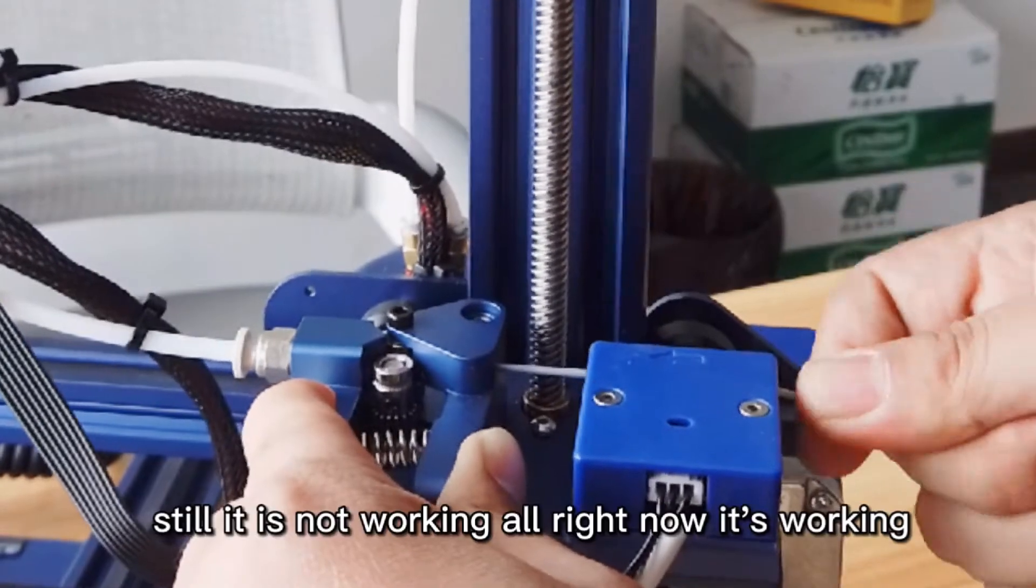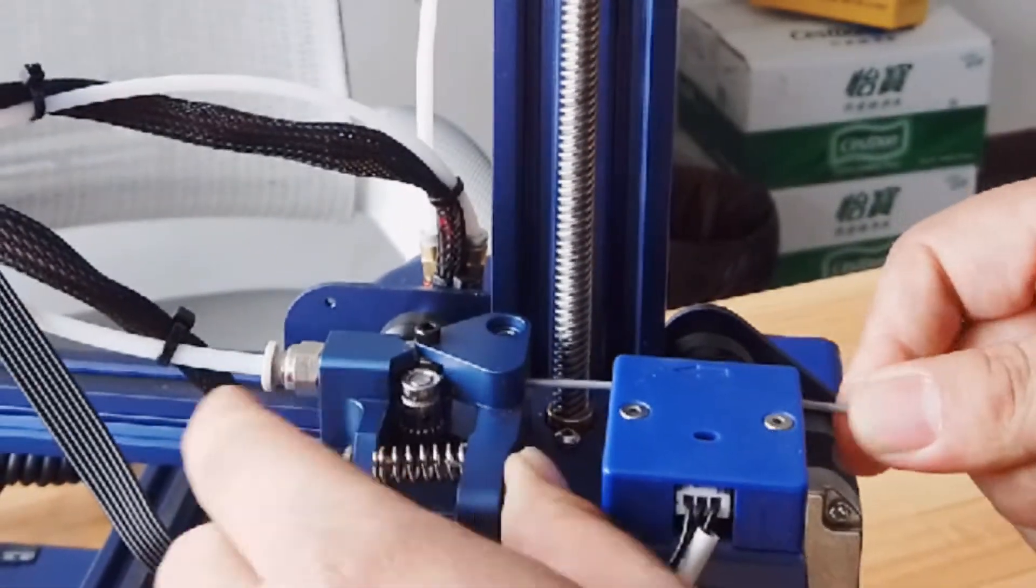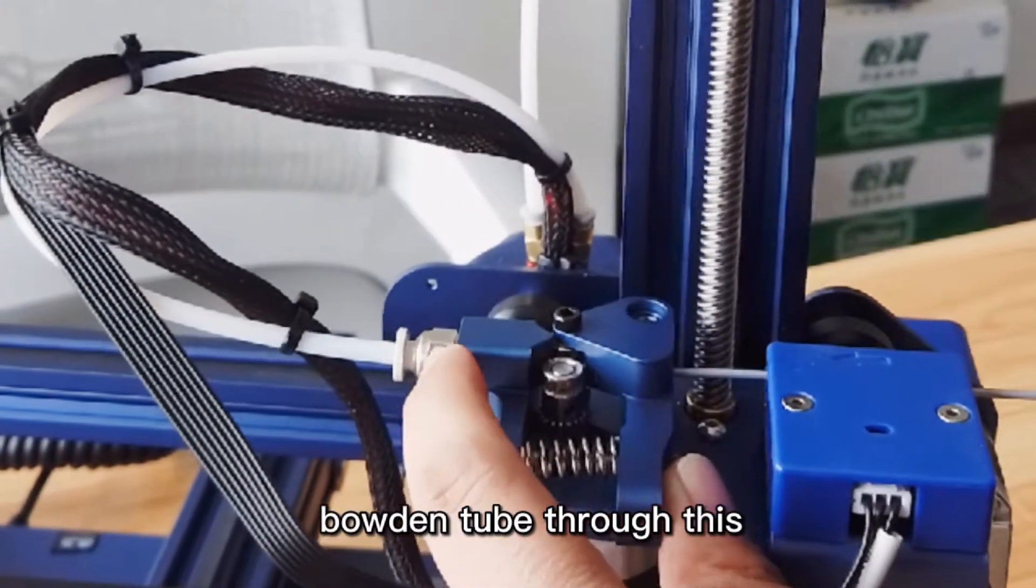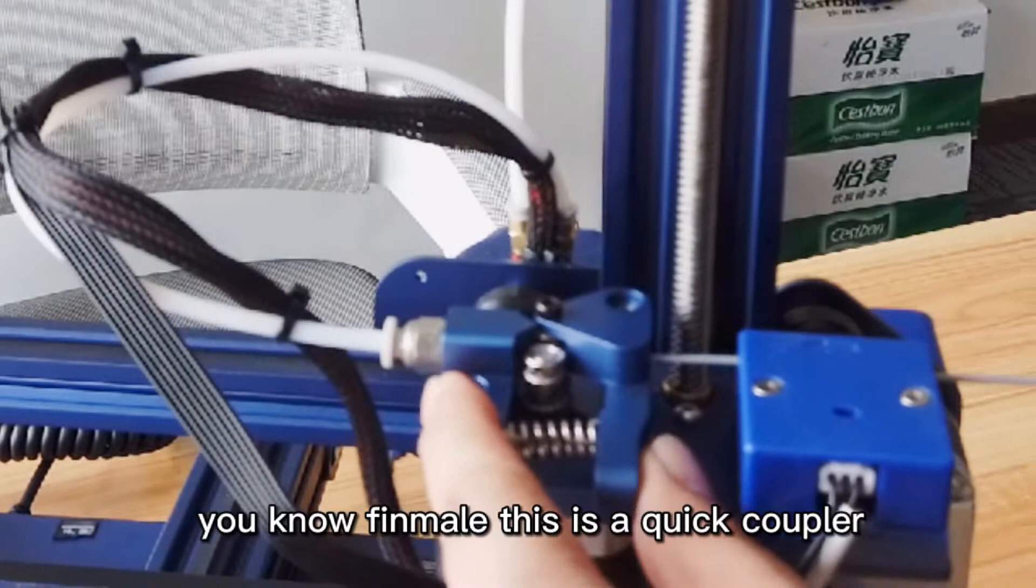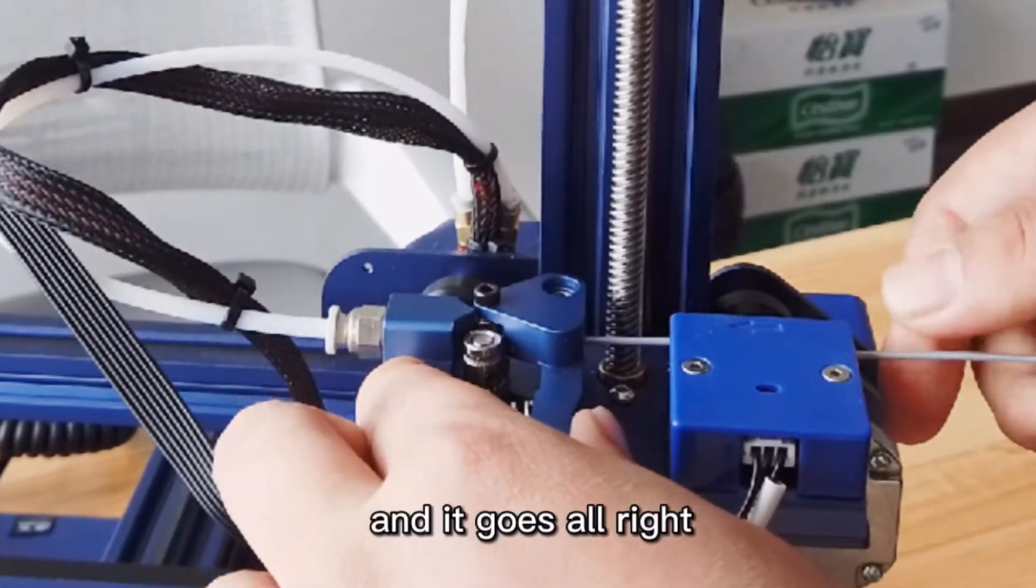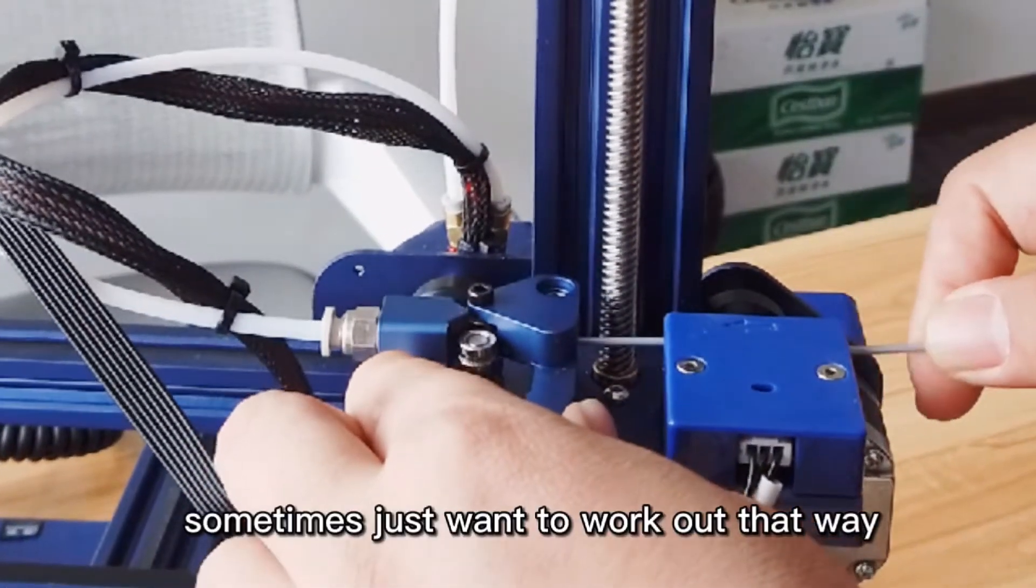So it's harder, still it's not working. All right, now it's working. Then I put it through. You can see the filament goes into the bowden tube through this filament sensor. This is a quick coupler and it goes all right. But sometimes it just won't work out that way.